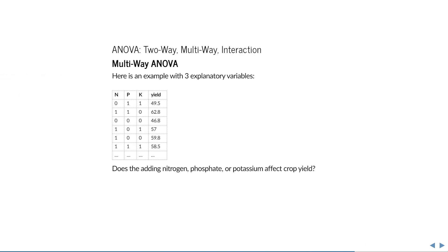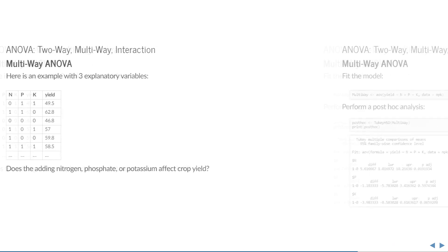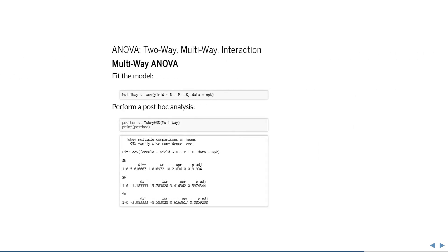What about more than two explanatory variables? Consider an experiment on the yield of crops. We want to know whether adding nitrogen, phosphate, or potassium affects the yield of the crops. This works exactly the same, just by adding another plus sign and then the third variable. The omnibus test will then have three F-tests, and the post-hoc will also contain three tabs.